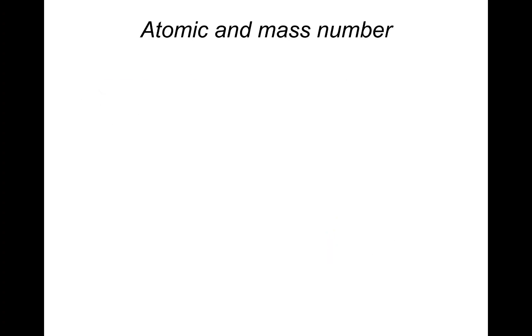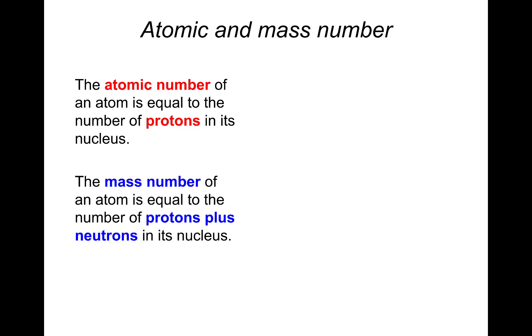So what about atomic and mass number? The atomic number of an atom is equal to the number of protons in its nucleus. And the mass number of an atom is equal to the number of protons plus the number of neutrons that are in the nucleus.